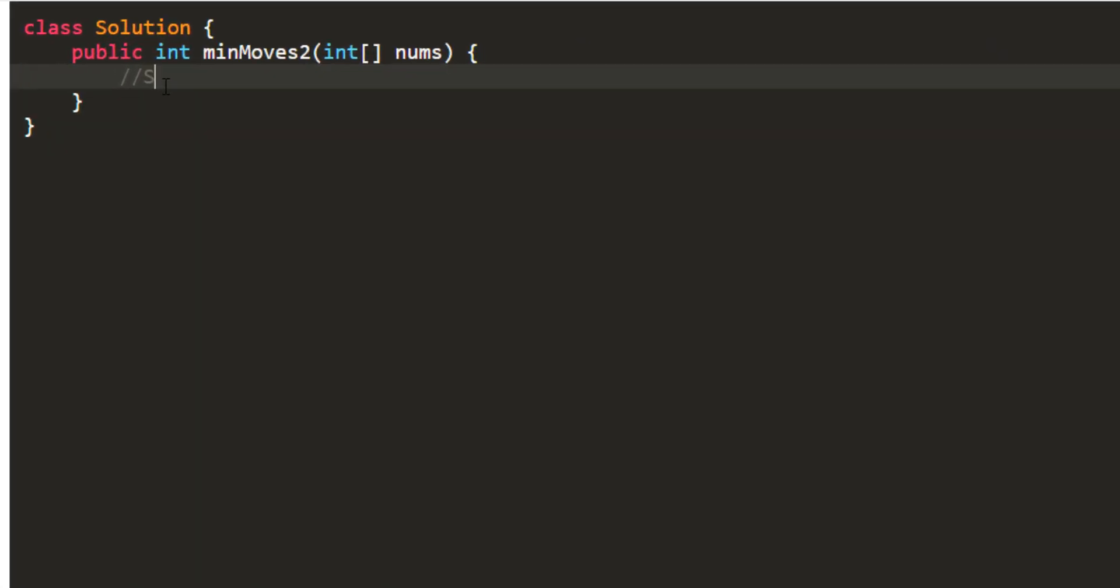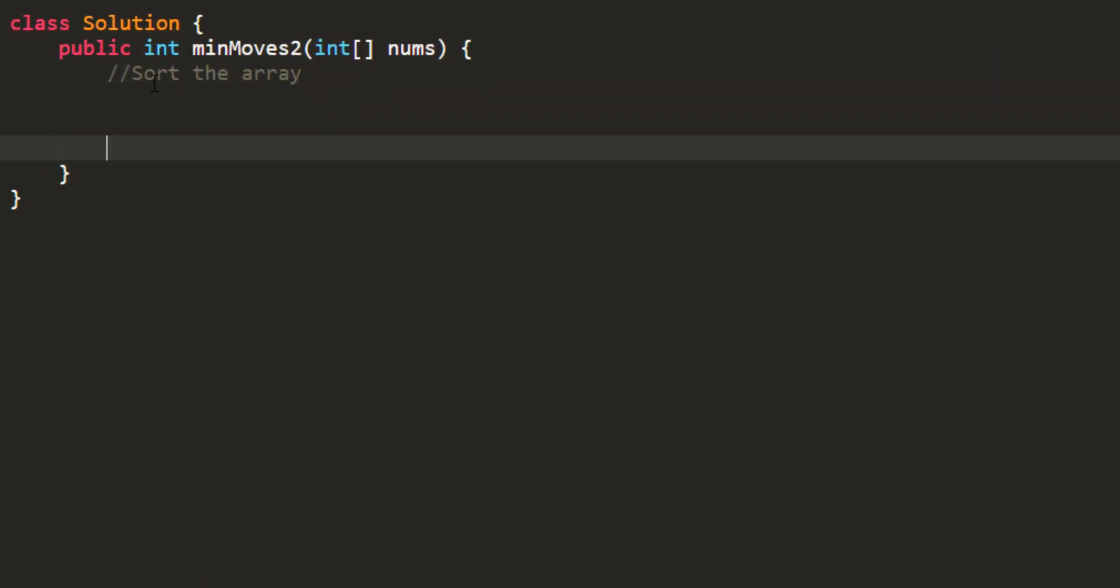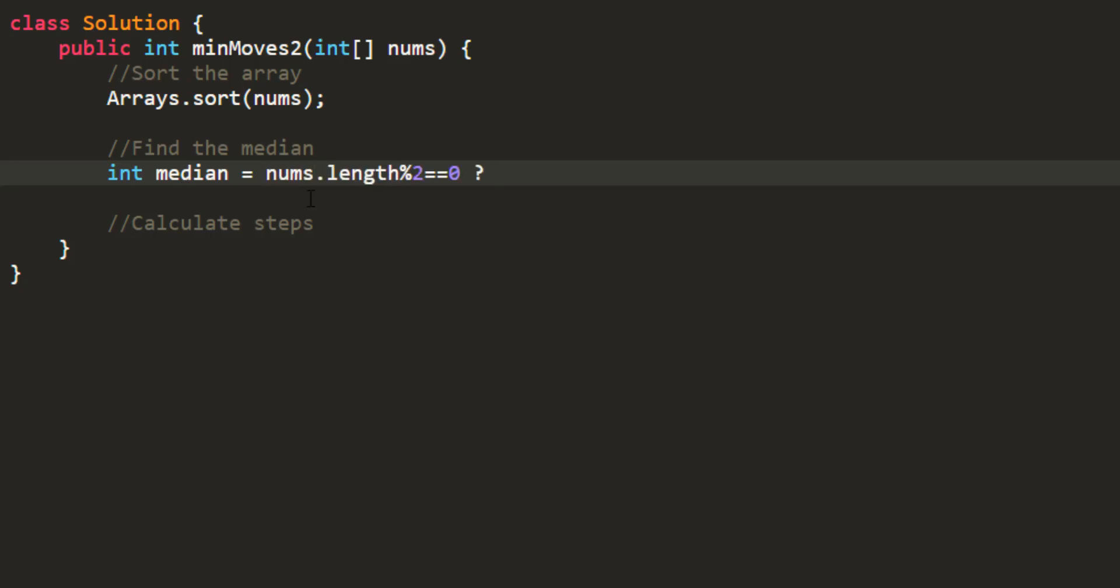The first thing that we need is sort the array then find the median and then calculate steps. So let's write the code for this and this is nothing but arrays.sort. Median would be found out by applying the two conditions for either even length of nums array or odd length of nums array. If this is even we need to find the average of the middle two which will be the elements at n by 2 and n by 2 minus 1.